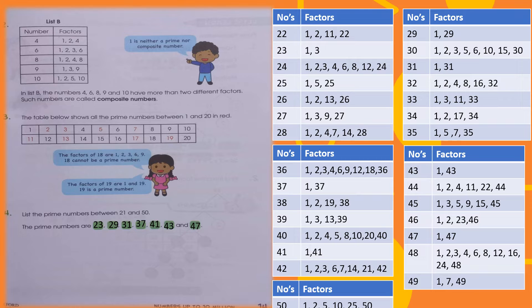You can also pick other numbers and verify yourself by finding their factors. For example, 14 is divisible by 2 and by 7, and the factors of 14 are 1, 2, 7 and 14. So 14 is a composite number. Whereas 7 can only be divided by 7 and 1, so 7 is a prime number.